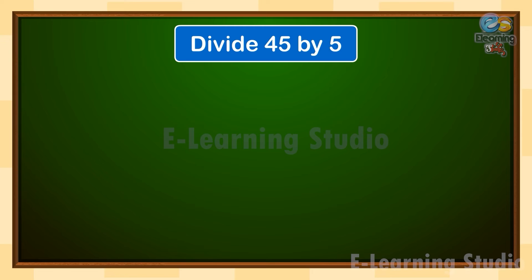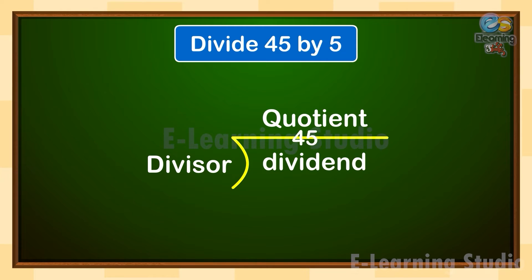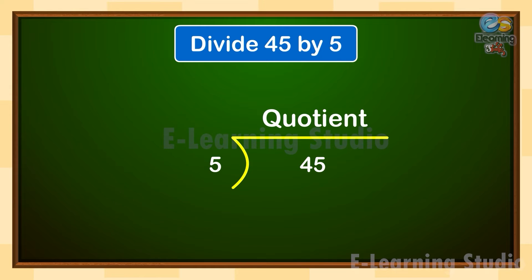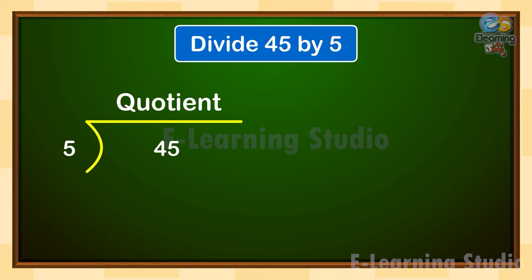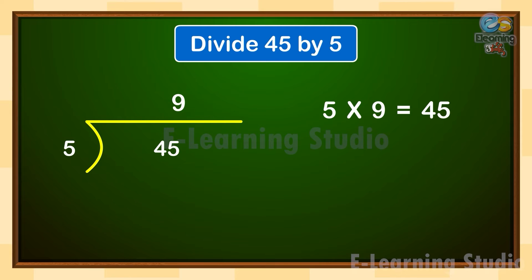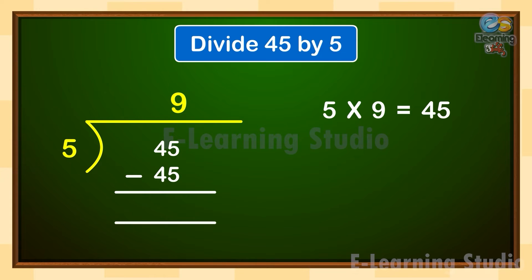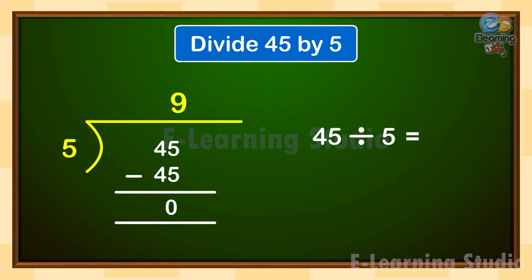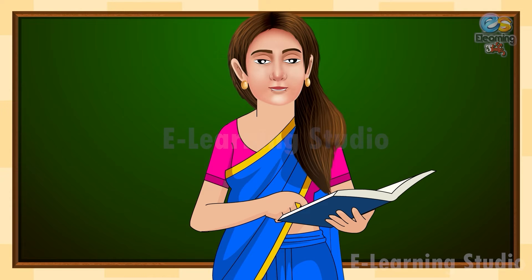Let us understand with the help of another example. Let us divide 45 by 5. First, put 45 in the dividend position and 5 in the divisor position. How many times does 5 go into 45? Yes, 5 nines are 45. Now write 9 in the 1's place of the quotient and write the product of the divisor 5 and the quotient 9 under the dividend, which is 45. So, 45 divided by 5 is equal to 9.